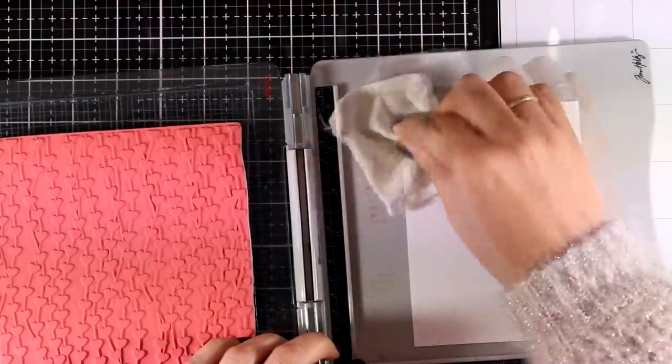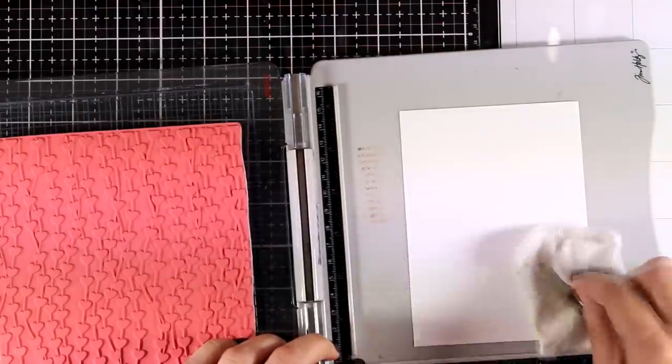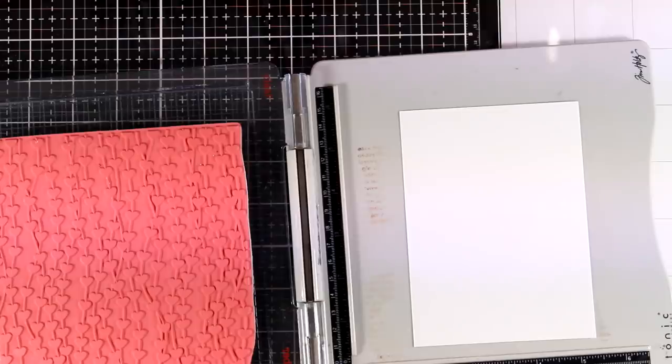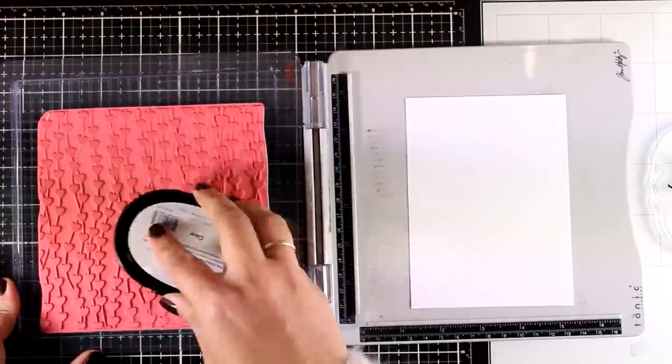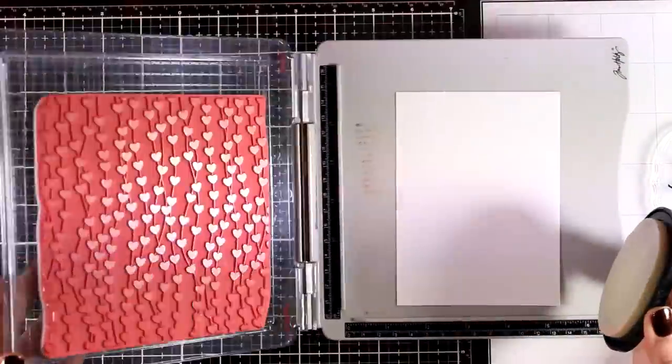For the first card I'm going with heat embossing, so I'm using my embossing bag there just to remove any static electricity. And I'm going to use my embossing ink and apply lots of ink all over the stamp.